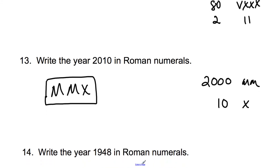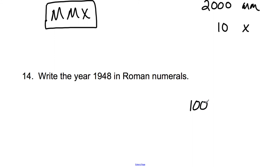1948. So I'll do the 1000, and then the 900, and then the 40, and then the 8. So the 1000 is M. The 900, the way to get 900 is to do a CM, so you get 100 taken away from 1000. The 40, of course, I need to get 10 subtracted from 50, so XL. That's 40, and then 8 is V and the 3 ones. So here's 1948. It's MCMXLVIII.